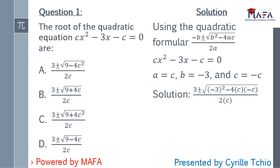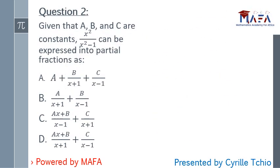Substituting into the formula, the solution is x equals 3 plus or minus square root of (−3)² minus 4·c·(−c), all over 2c. Simplifying, we get 3 plus or minus square root of 9 plus 4c², all over 2c. The answer is C.